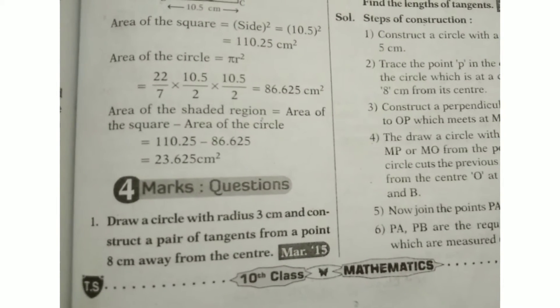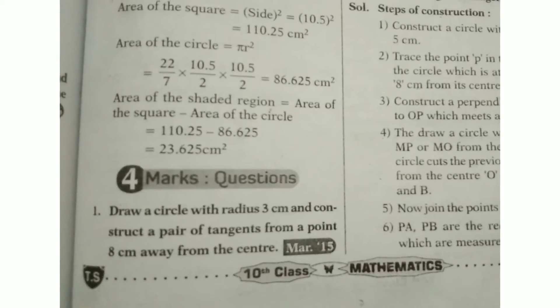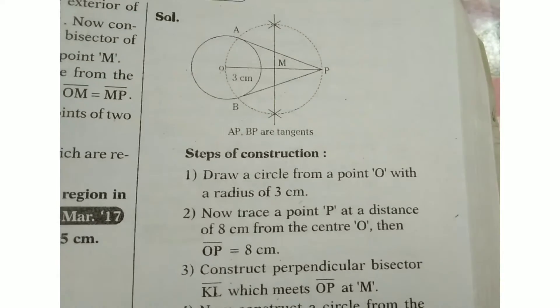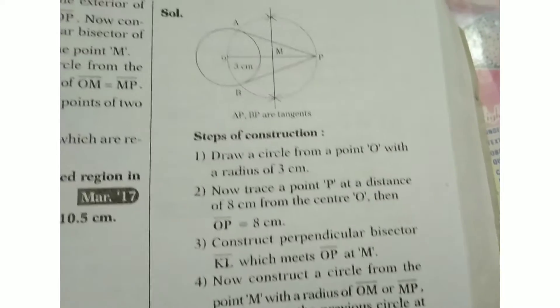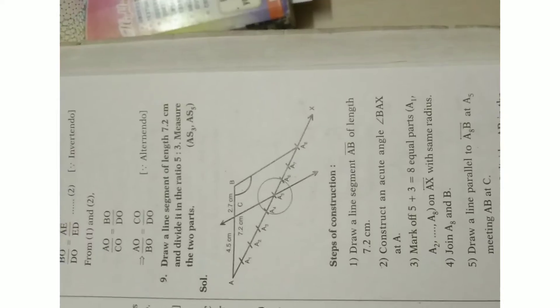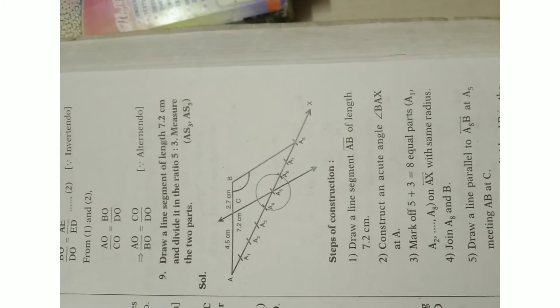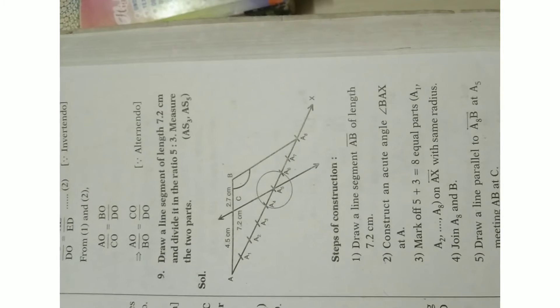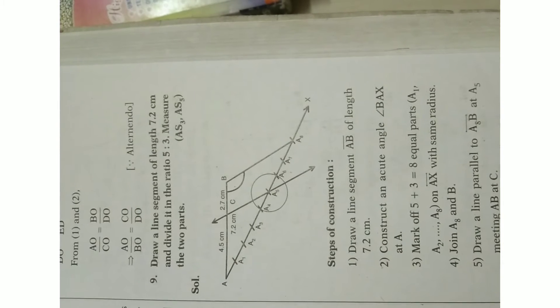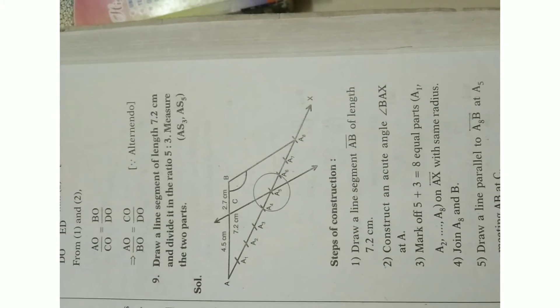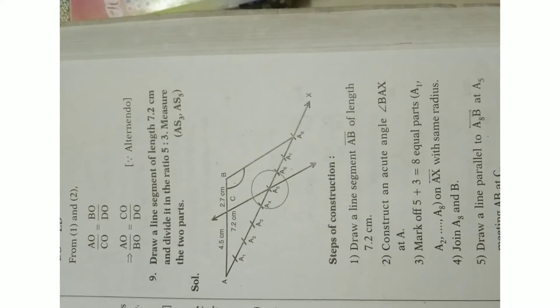One more 8-mark question: draw a circle with radius 3 cm and construct a pair of tangents from a point 8 cm away from its center. Write the steps of construction and construct the pair of tangents. Also: draw a line segment of length 7.2 cm and divide it in the ratio 5:3, then measure the two parts.